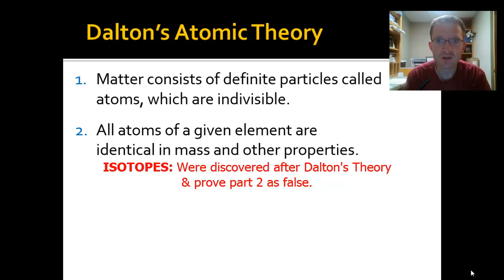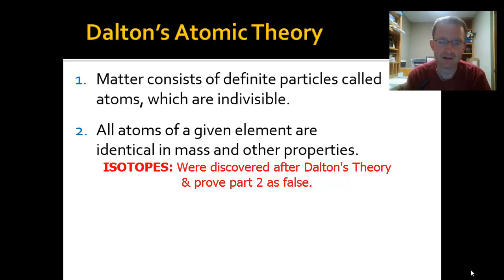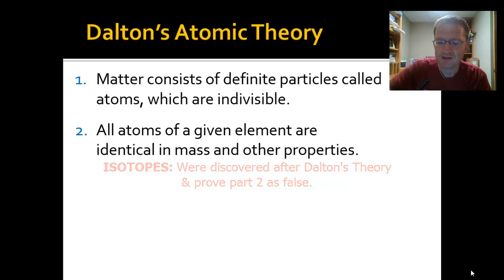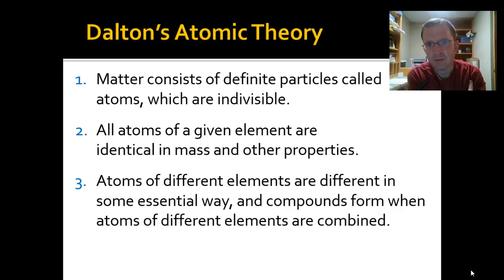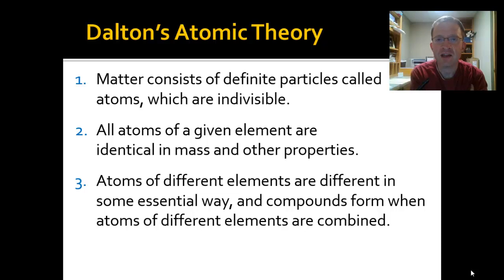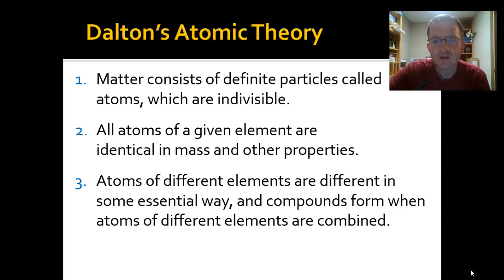Isotopes are the reason part two of Dalton's theory is false. Every atom of carbon has certain things in common, but not every carbon atom is identical in every way — some properties are shared, some differ. Part three states that atoms of different elements are different in some essential way, and that compounds form when atoms of different elements are combined. This is very true. That essential difference between elements comes down to protons.